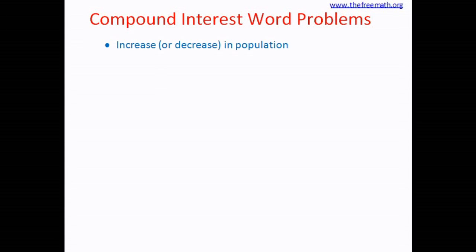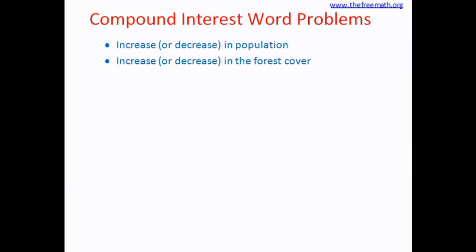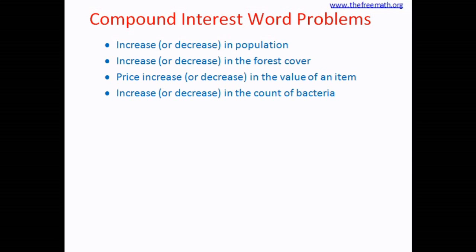For example, this formula can be used for increase or decrease in population, or increase or decrease in the forest cover of a country or area. It is also used in the price increase or decrease in the value of an item — say the price of a car, machinery, or your house. And it can also be used in the laboratory to check the increase or decrease in the count of bacteria. It is important to know such applications because you will see them in compound interest word problems.